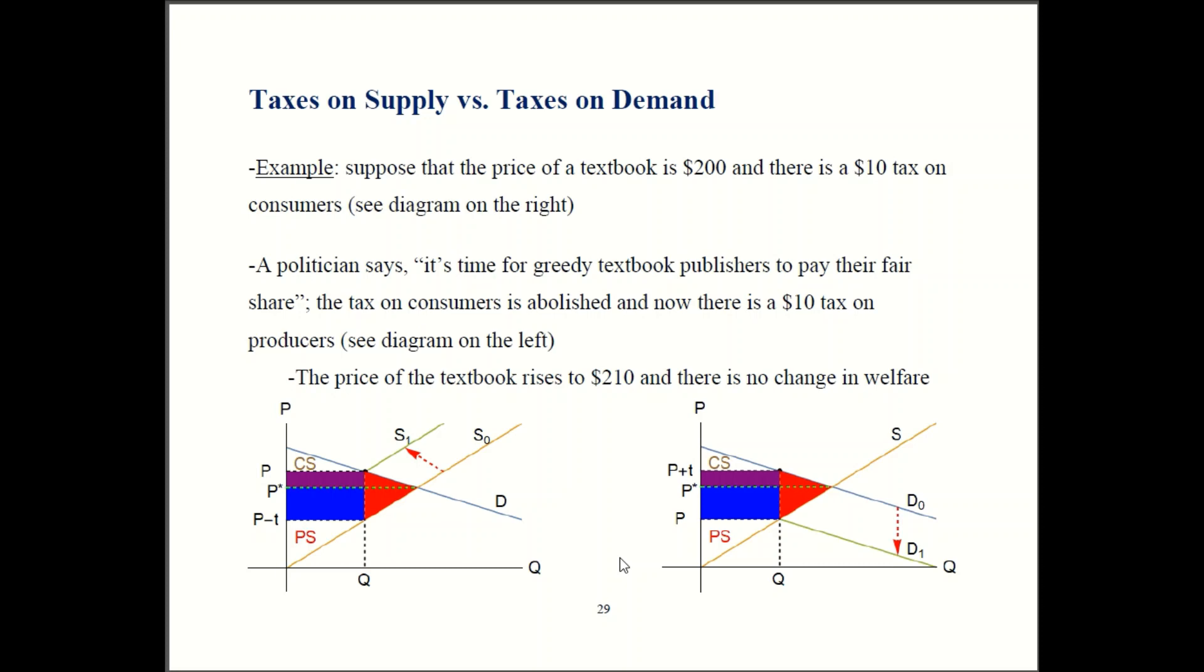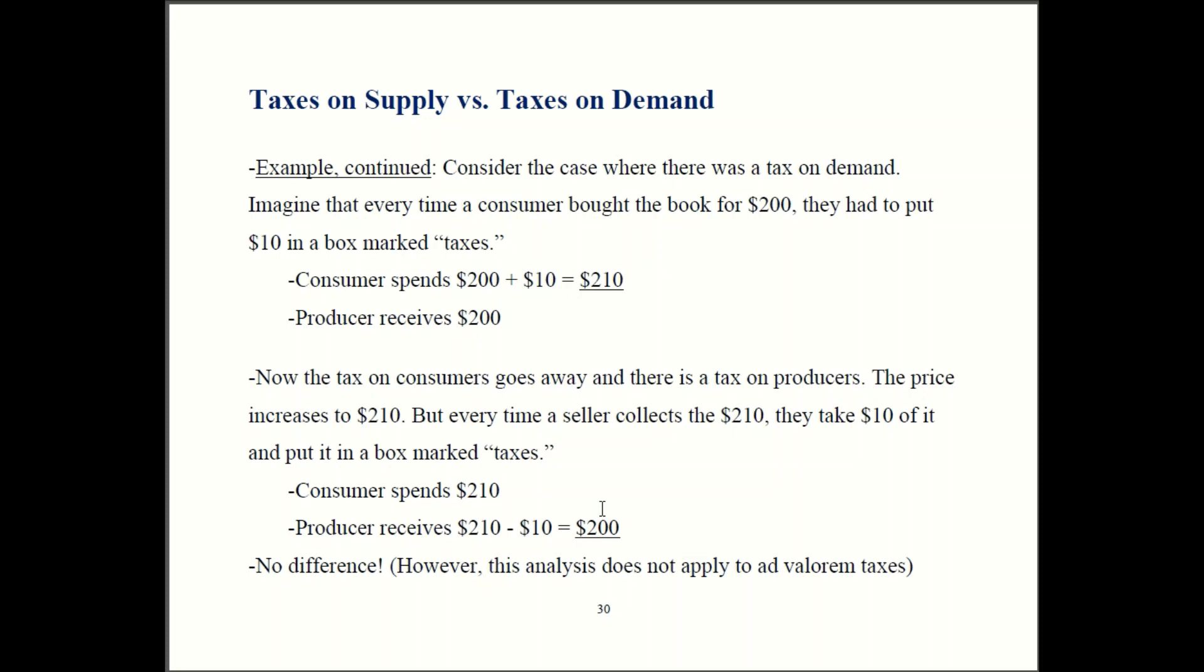So I talked about the textbook example. Let's say the price is $200, and we're taxing consumers by $10 per book. So it looks like this over here. So it's a tax on demand, so demand shifts back by that $10 amount. If we switch it around and make the publishers, the producers pay a $10 tax, we go back to our original demand curve, but now supply is the one shifting back. And our diagram here for who pays what looks exactly the same. Same deadweight loss, same amount producers pay, same amount that consumers pay.